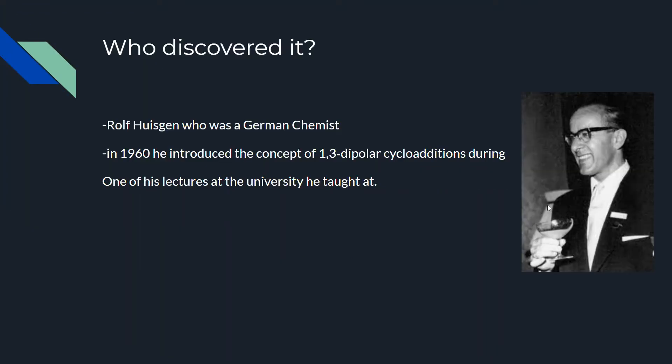Who discovered it? Rolf Huisgen, who was a German chemist, discovered it. In 1960, he introduced the concept of a 1,3-dipolar cycloaddition during one of his lectures at the university that he taught at.